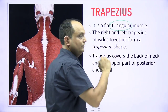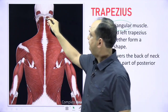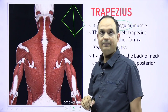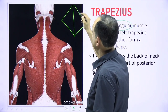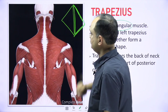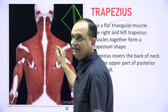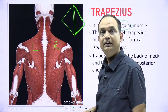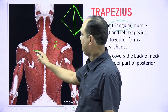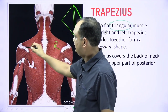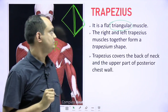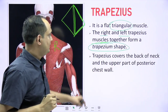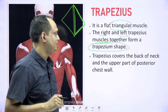Trapezius is a flat, triangular muscle. The trapezium shape consists of two triangles joined together. On the right side of the midline is the right trapezius, and on the left is the left trapezius — together they form the trapezium shape, which is why the muscle is named trapezius. The trapezius covers the back of the neck and the upper part of the posterior chest wall.